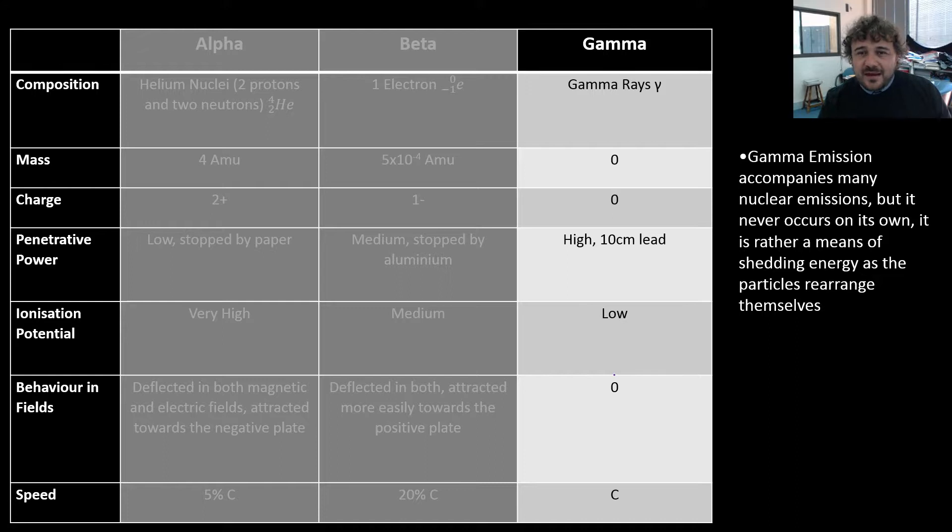Then we have gamma rays. Now again, this accompanies other things. It does not occur on its own. So a gamma ray is a massless particle. It's a ray. So zero mass, zero charge. But because it has zero mass and zero charge, it goes through lots of different things. And you need roughly 10 centimeters of lead to kind of block it out. The ionization potential is low, but it will travel right through you, which means it will hit stuff. And it probably, so it's low, but this is a high cancer causing type of radiation. Because it travels straight through you, which means there's a low chance of ionization, but there's a lot of chances it's going to hit something on the way through. Behavior in fields is zero. It does not react to electromagnetic fields at all. And its speed is the speed of light.